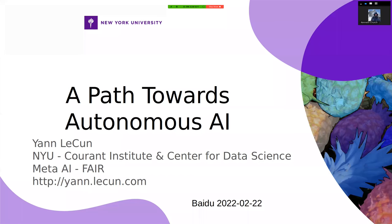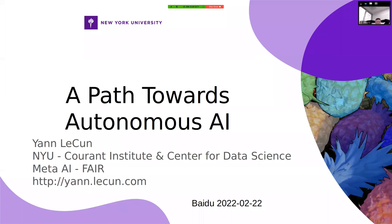We now have techniques that allow us to train systems to represent data. We have good knowledge of reinforcement learning, optimal control, and various related fields. Is there a way to assemble all the pieces into a consistent architecture that may have the properties of intelligence we observe in animals and humans?